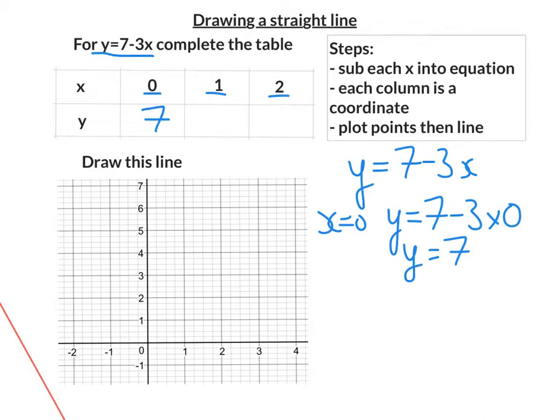Let's now do the second one here. Let's put x equals 1 into the equation. So we have y is equal to 7 minus 3 times 1 this time. 3 times 1 is 3. 7 take away 3 is 4. Put 4 in there.